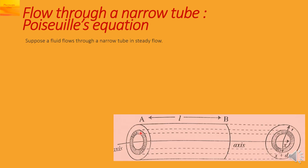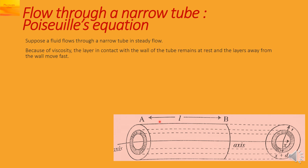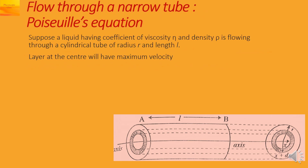Observe this diagram. We will suppose a fluid flowing through this narrow tube. The flow is considered to be steady. Because of viscosity, the layer in contact with the wall of the tube remains at rest, and the layers away from the wall are moving fast. Poiseuille derived a formula for the rate of flow of a viscous fluid through a cylindrical tube. We will suppose that the liquid has a coefficient of viscosity eta and density rho, flowing through a cylindrical tube of radius R and length L.